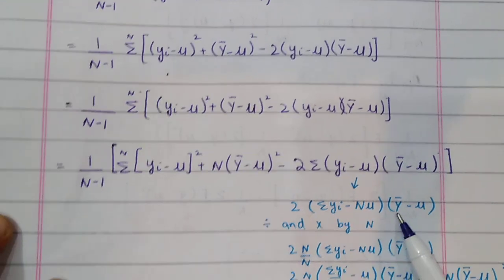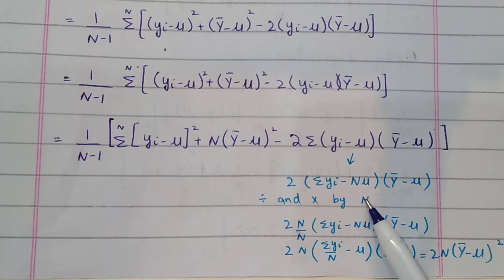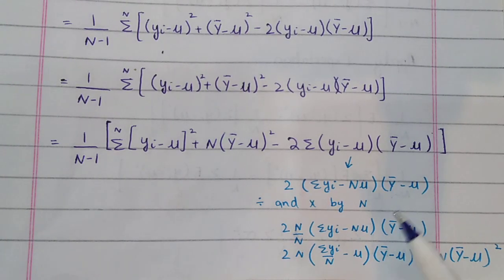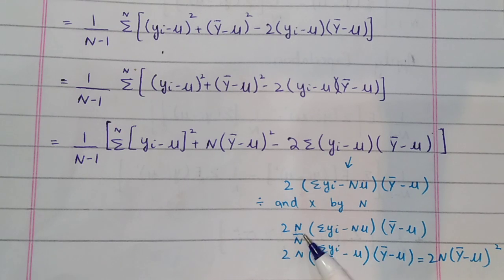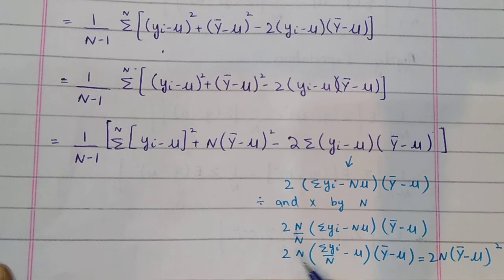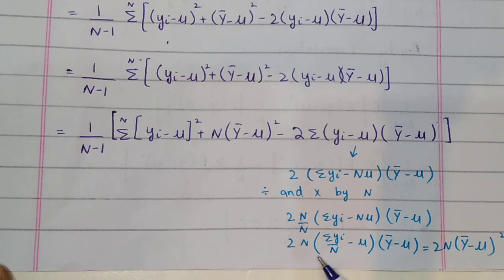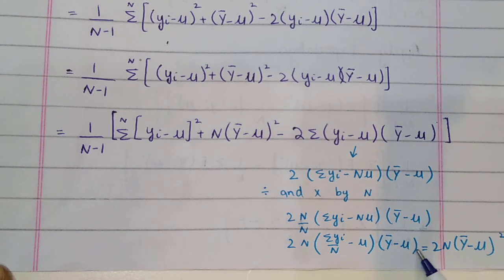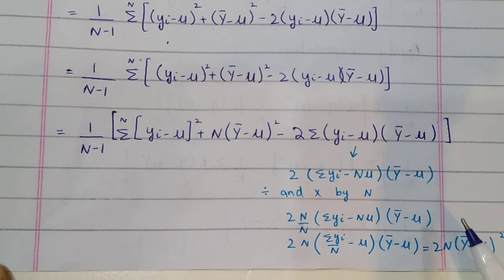Now we divide and multiply by capital N. When we divide and multiply by capital N, these are the same squared numbers. We multiply the summation of Y, dividing by capital N, so the remaining term is given by capital N. In this term we write y-bar. This y-bar and this y-bar are the same. When the base is the same, the powers add: 1 and 1 add to give 2y-bar minus mu, and 2n adds to 2n.